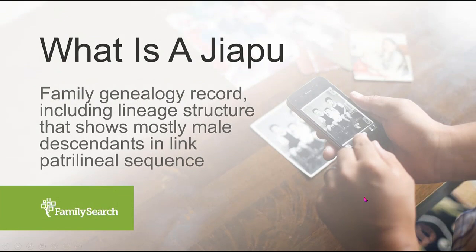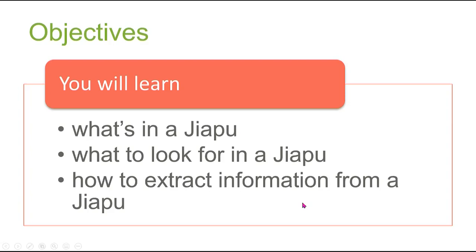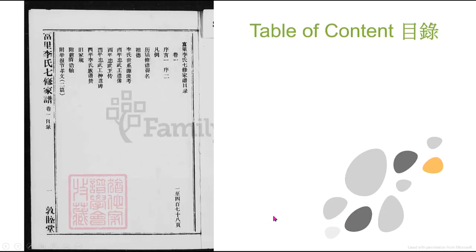Let's begin with: what is a Jiapu? Jiapu is an important part of Chinese genealogy. It is a family genealogy record including lineage structure that shows mostly male descendants in linked patrilineal sequence. During this webinar together we will learn what's in the Jiapu, what to look for in the Jiapu, and how to extract information from a Jiapu.